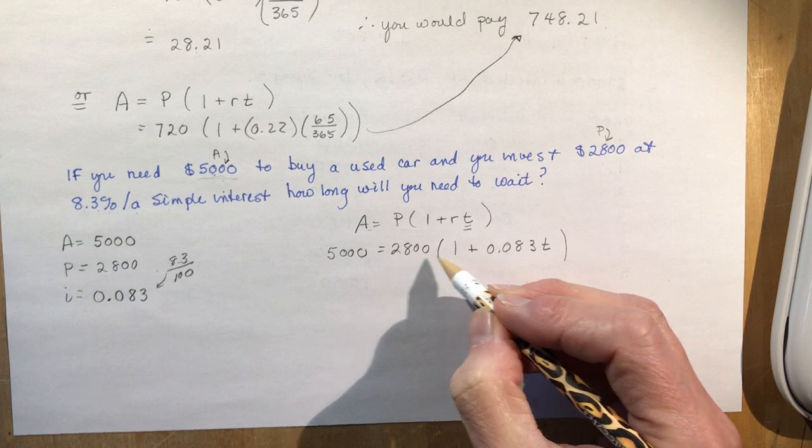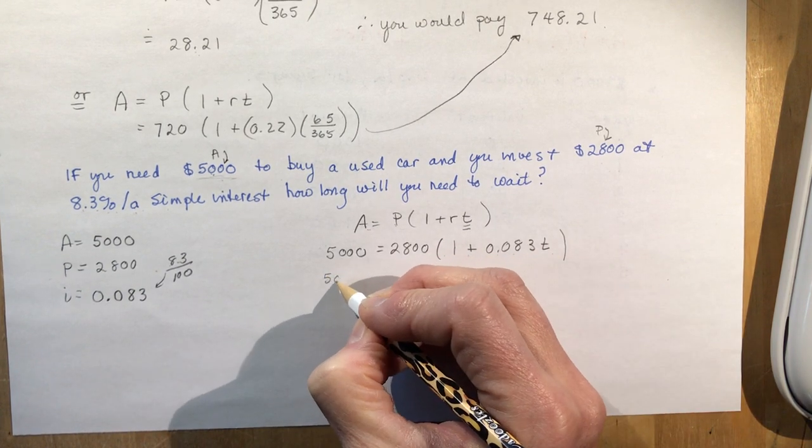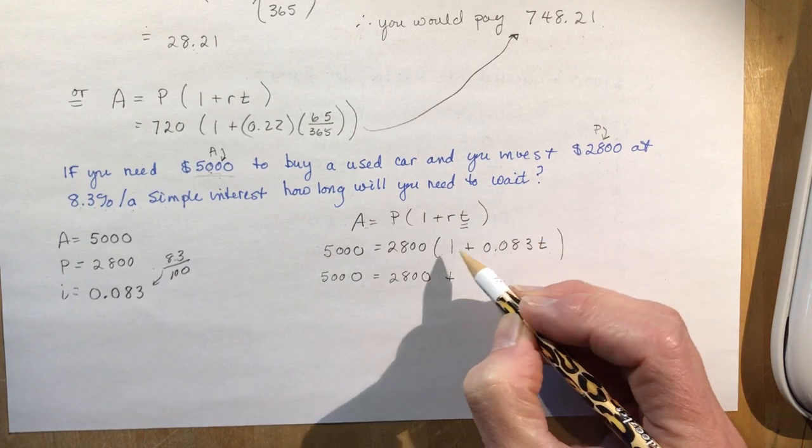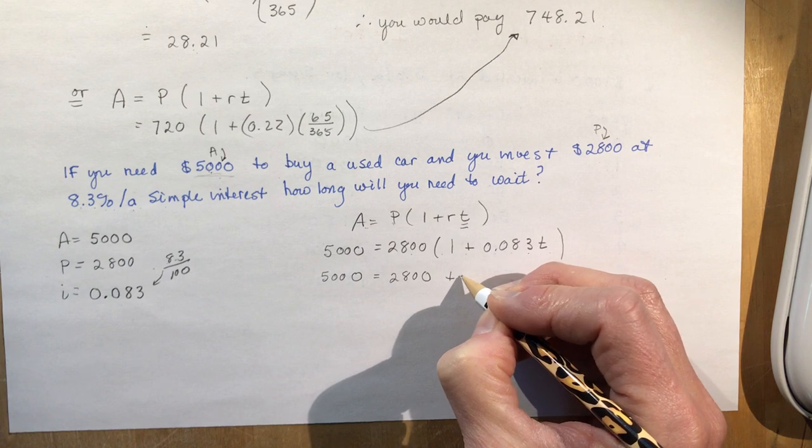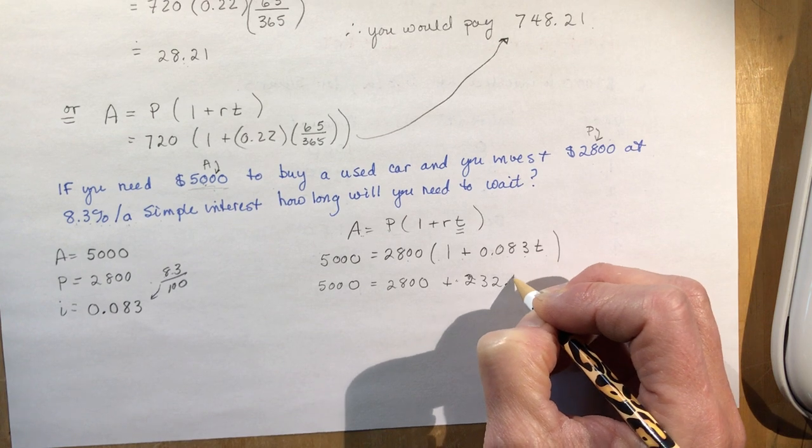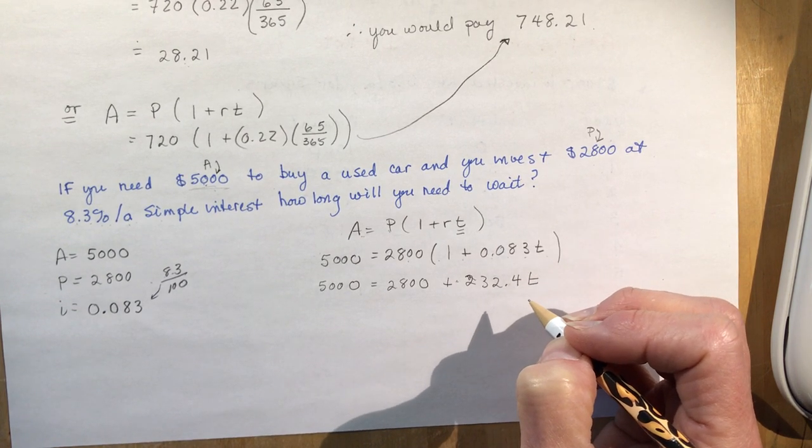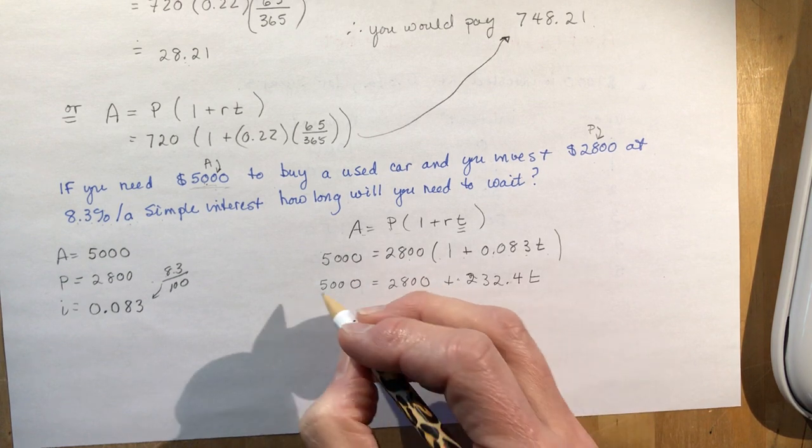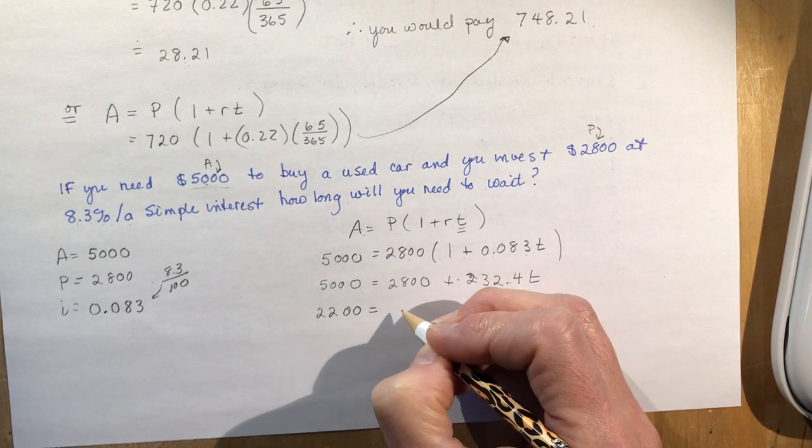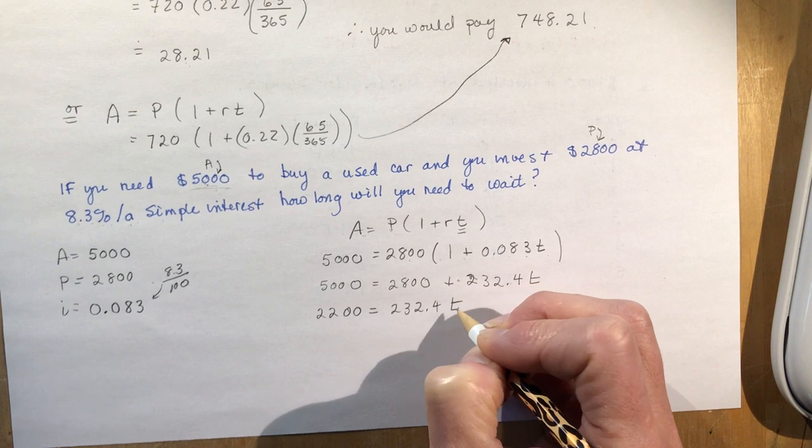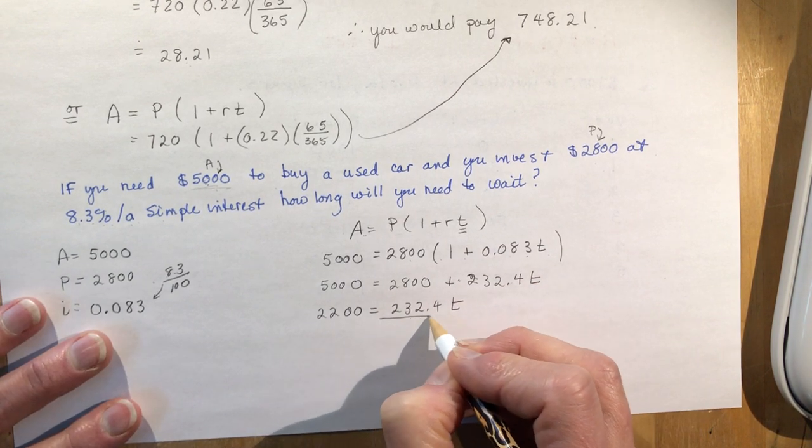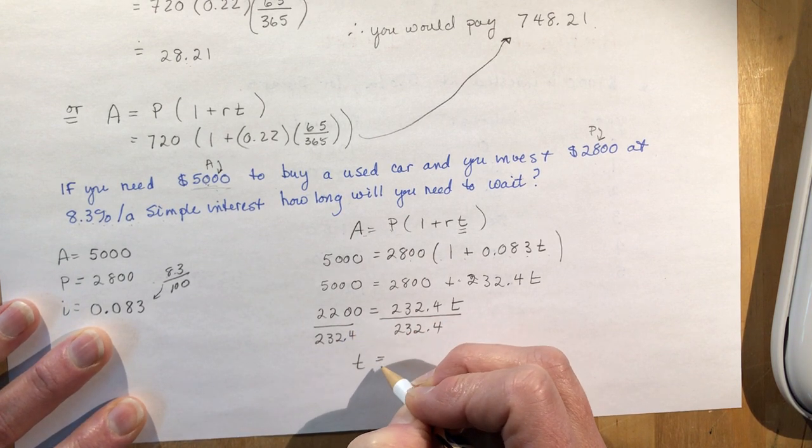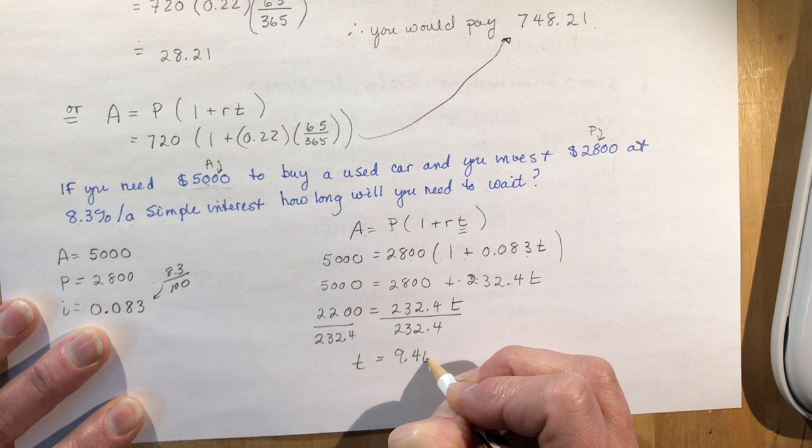To solve for T, I need to expand this bracket first. 5,000 equals 2,800 plus 232.4 times T. Now rearrange the equation. Subtract 2,800, so 5,000 minus 2,800 gives me 2,200 equals 232.4T. Then divide to find T. Divide by this on both sides.